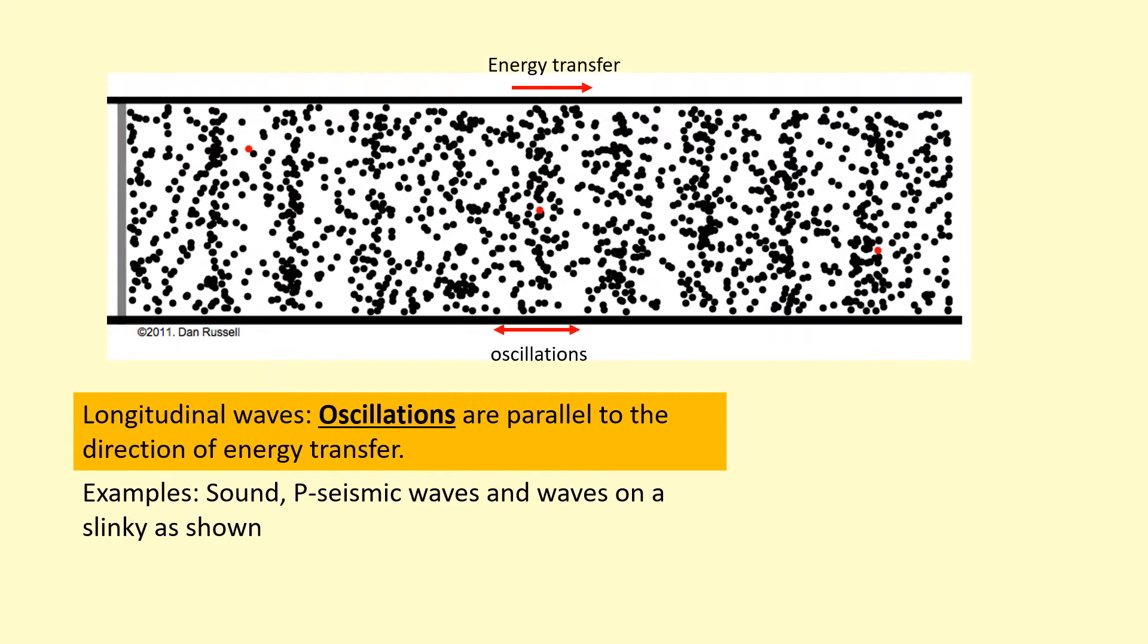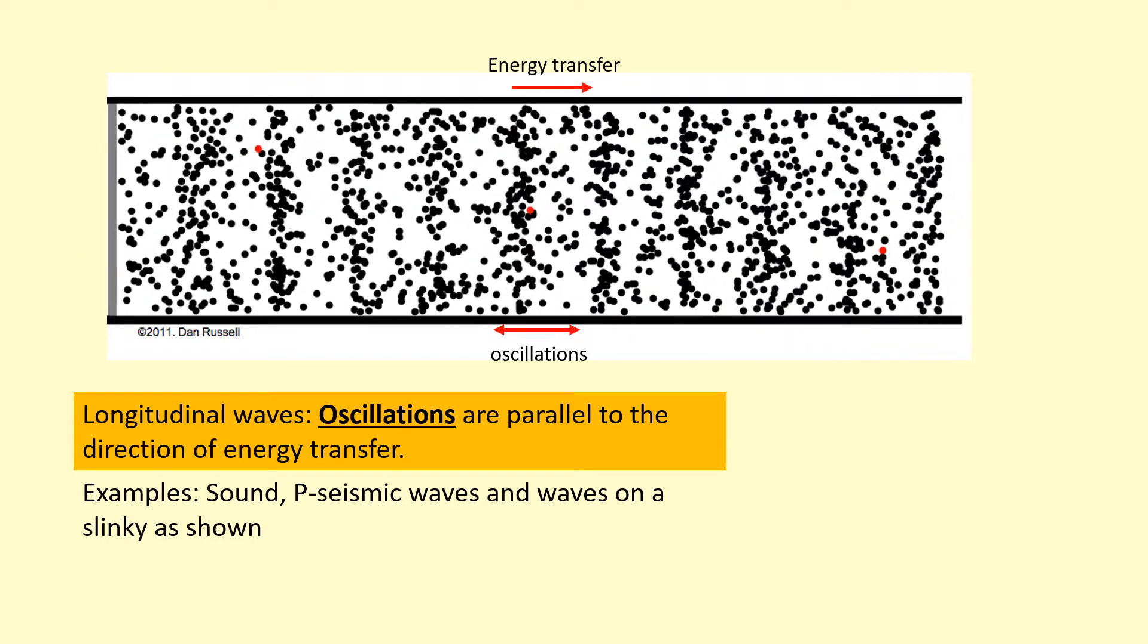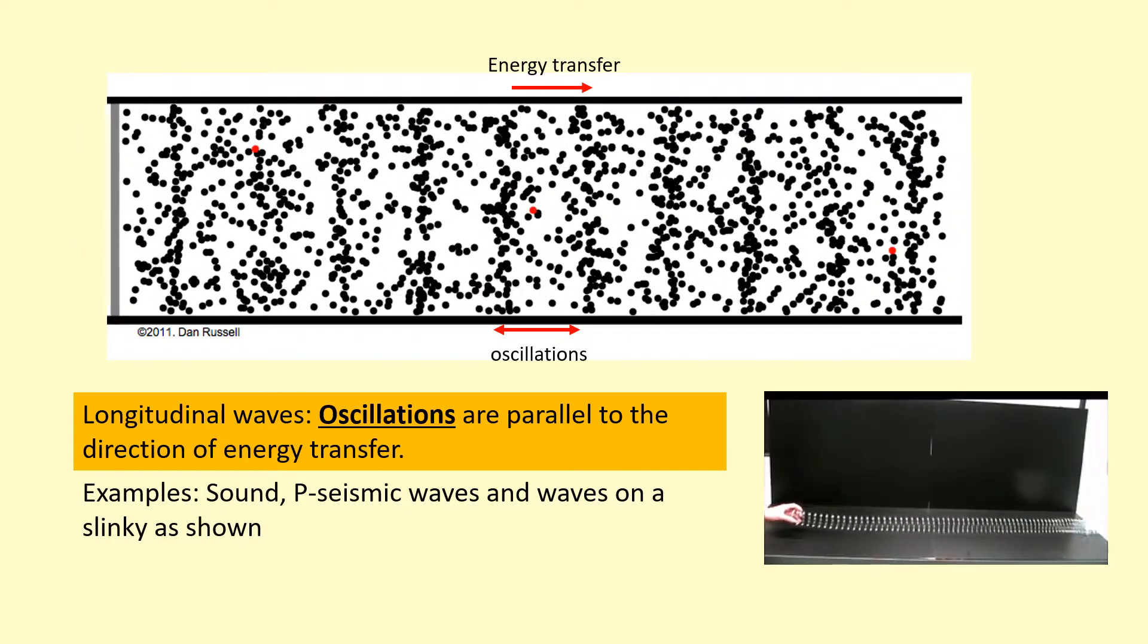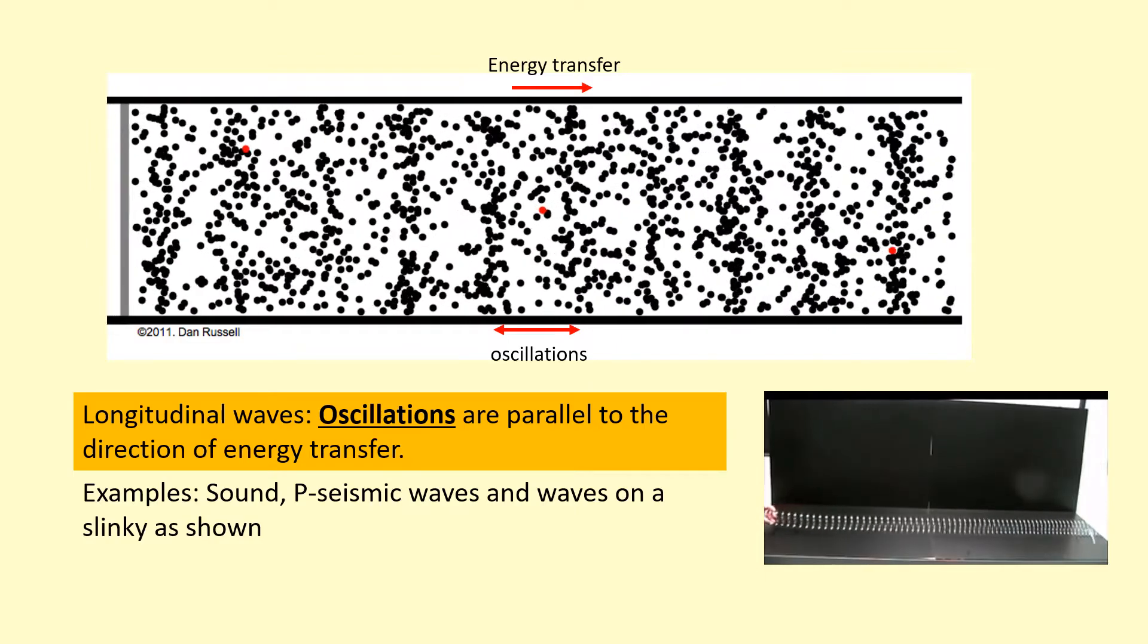Examples of this include sound, P seismic waves, and waves on a slinky like this. You can see the compression transferring across in pulses.